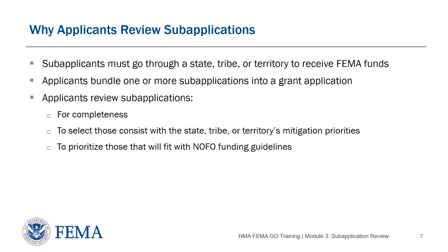Sub-applications are also reviewed by grant applicants to ensure that they are consistent with their mitigation priorities as described in their Hazard Mitigation Plan. A yearly funding limit is established in the Notice of Funding Opportunity — this is the maximum amount the combined sub-application requests can total. The Notice of Funding Opportunity may also include guidelines on the number of sub-applications that can be included in one grant application.